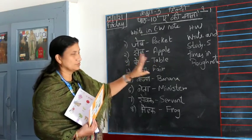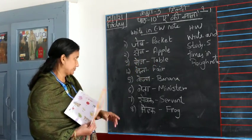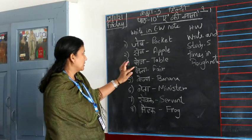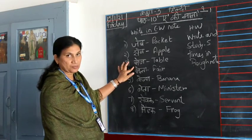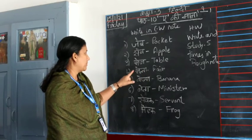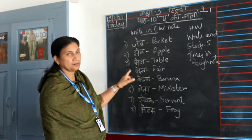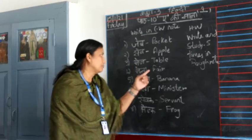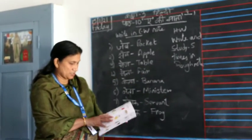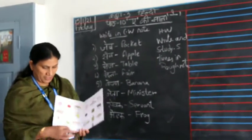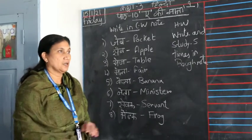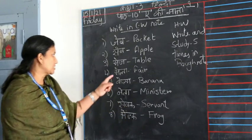The fourth one is 'Mela.' M-E-L-A. Mela means a fair. You can see it in your book on page number 28. Mela means a fair.